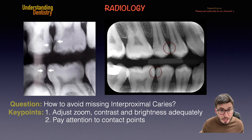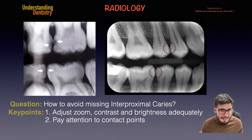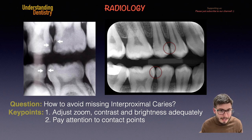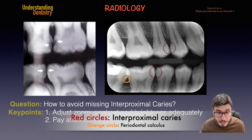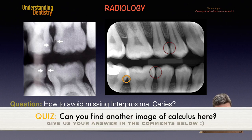We can differentiate initial caries from other alterations — for example, calculus. Calculus can happen in those interproximal spaces, but interproximal caries will likely happen on the contact points specifically.